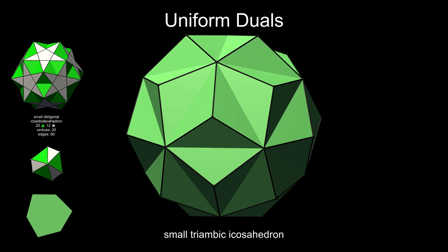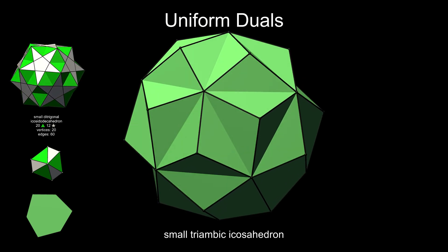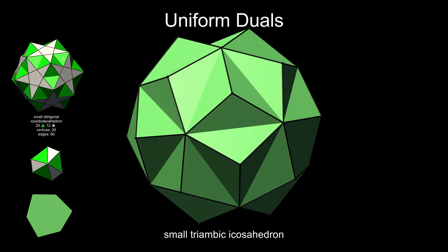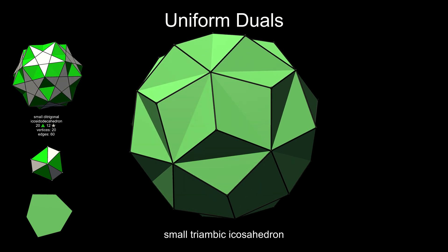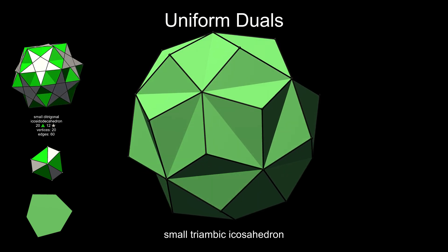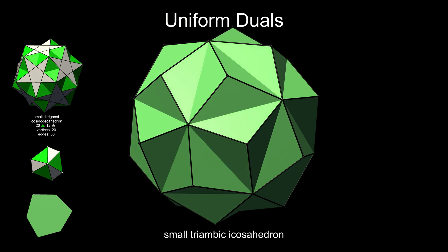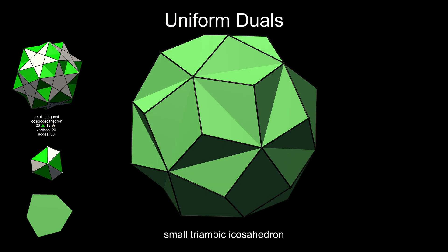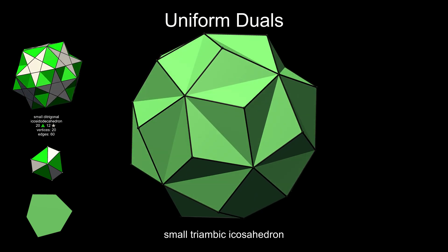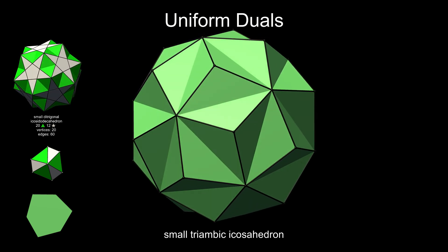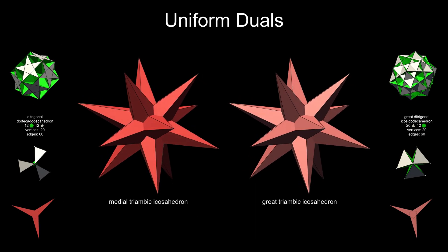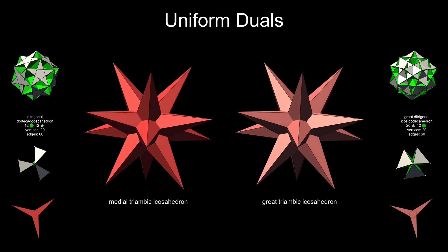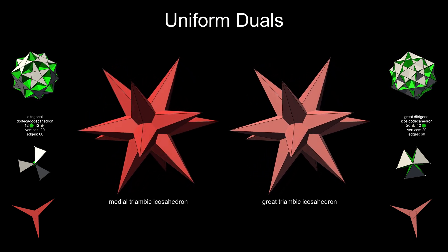The dual of the small ditrigonal icosidodecahedron is the small triambic icosahedron. This has 20 faces in the same planes as the platonic icosahedron, and it can be viewed as an icosahedron with its faces extended until they meet again with other faces. Such polyhedra are called stellations. There are two other uniform duals that are icosahedron stellations: the medial triambic icosahedron and the great triambic icosahedron.